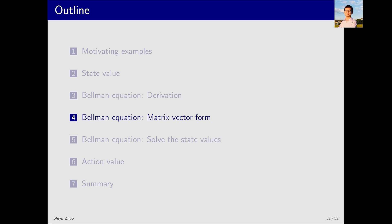In the previous part, we derived the element-wise expression of the Bellman equation. Now let's discuss its matrix vector form.